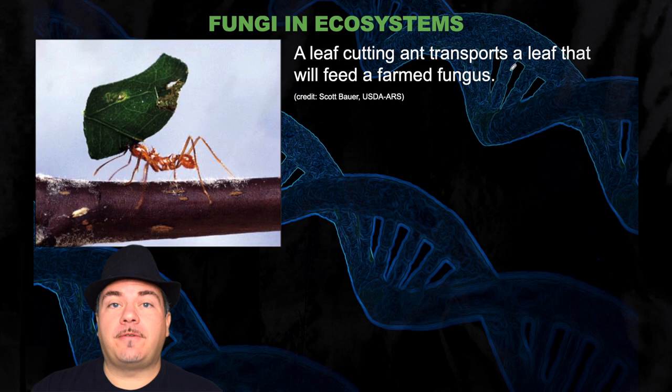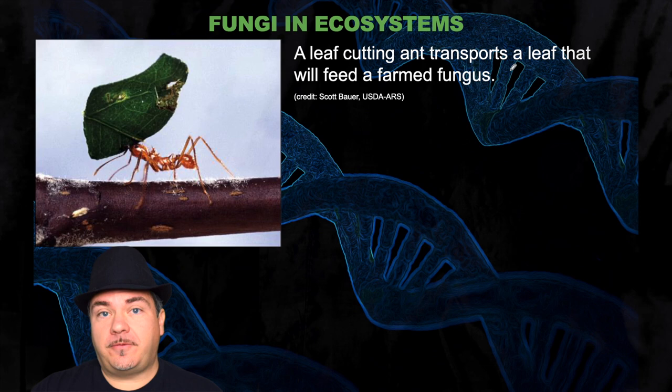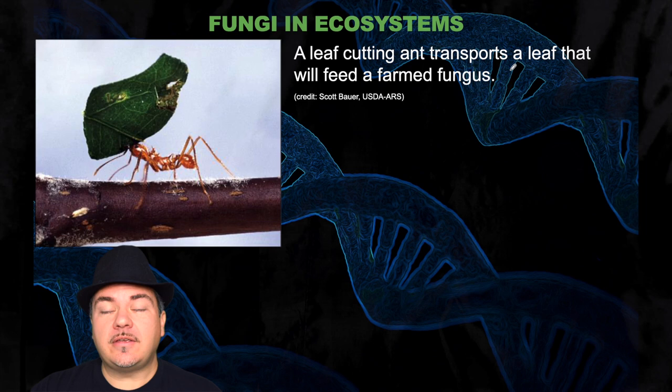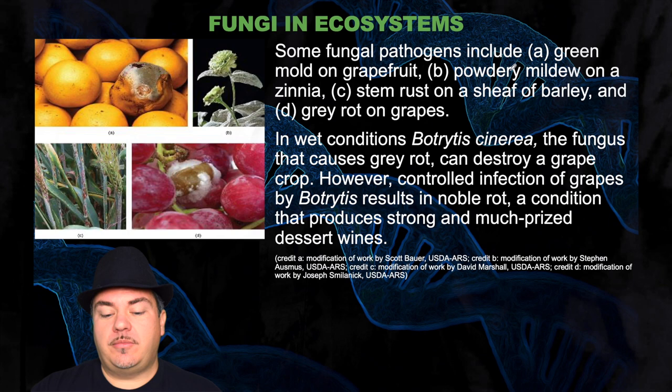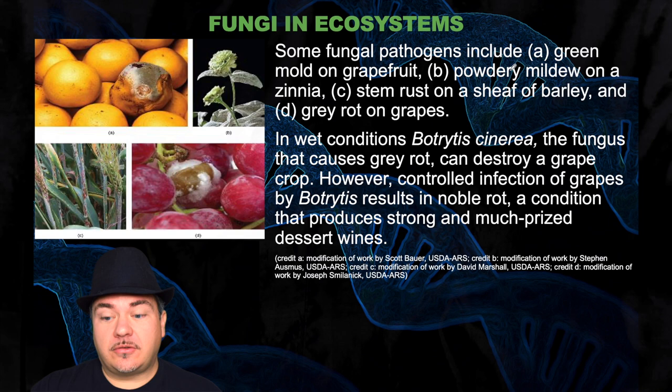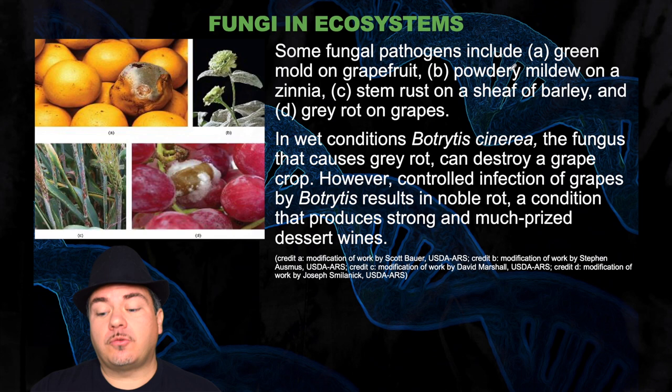Another way fungi interact in our ecosystem — some ants actually farm fungi. An ant carries a leaf and uses it to feed fungi, because the fungi in turn give the ants nutrients. Some fungal pathogens include green mold on grapefruit, powdery mildew, stem rust, and gray rot on grapes. In wet conditions, the fungus that causes gray rot can destroy a grape crop. However, controlled infections of grapes result in what's called noble rot, a condition that produces strong and much-prized dessert wines.